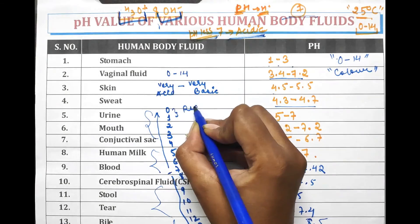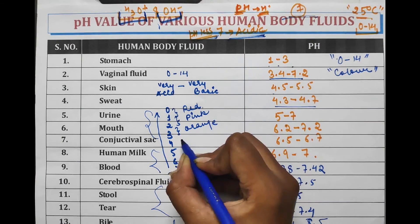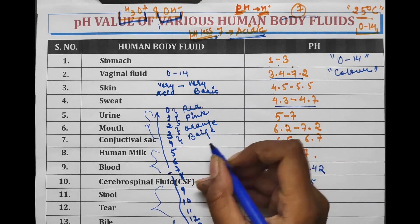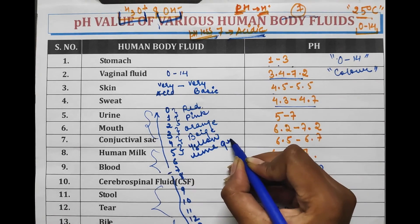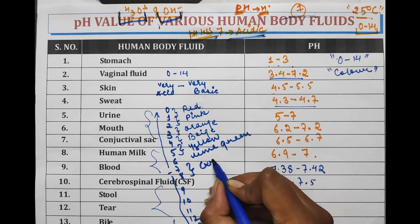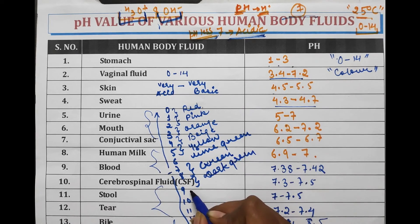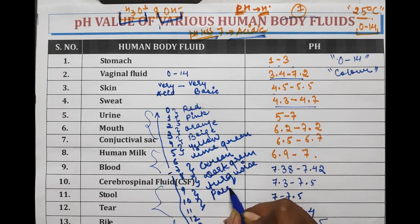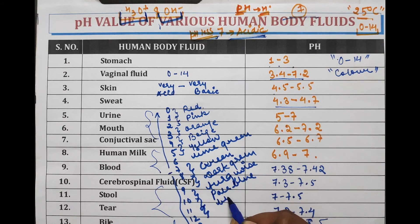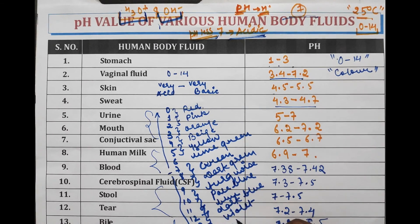pH 0 to 1: red. pH 1 to 2: pink. pH 2 to 3: orange. pH 3 to 4: beige. pH 4 to 5: yellow. pH 6 to 7: lime green. pH 7 to 8: green. pH 8 to 9: dark green. pH 9 to 10: turquoise. pH 10 to 11: pale blue. pH 11 to 12: blue. pH 12 to 13: slightly dark blue. pH 13 to 14: violet. pH 14: purple.